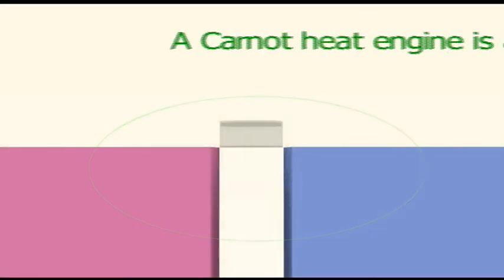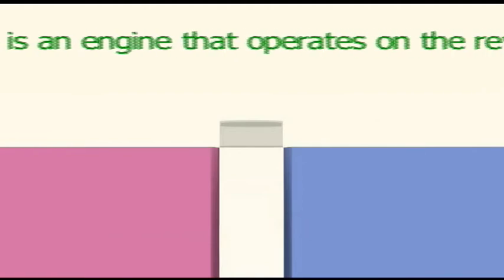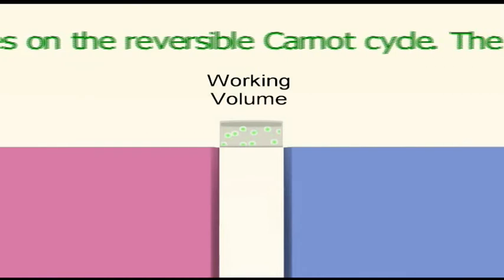And this illustrates a Carnot heat engine, consisting of a grey cylinder, which is a closed system containing an ideal gas as a working volume.